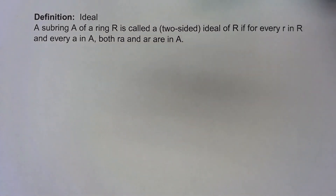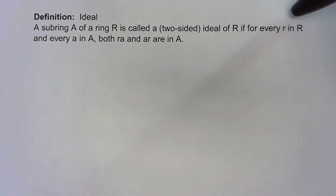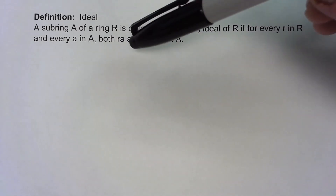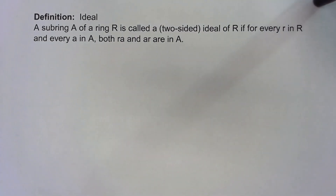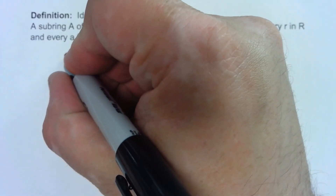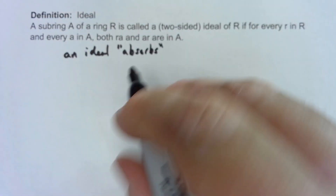When we were studying groups we had the idea of a normal subgroup which gave us some properties with which we could do things. It's not exactly the same, but sort of the analog for rings is an ideal. A subring of a ring R is called an ideal if for every element of the ring and every element of the ideal, both RA and AR are in the ideal. This is sometimes called an absorption property — we can say that an ideal absorbs elements of the ring.